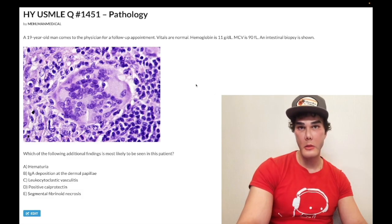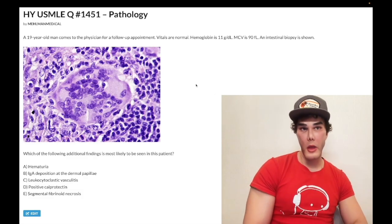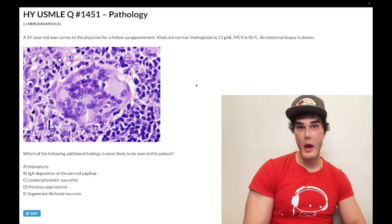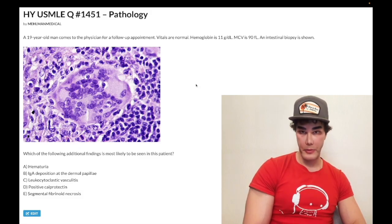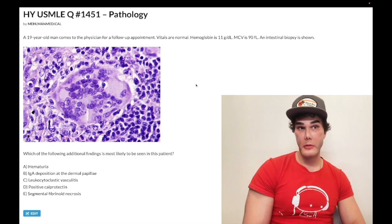How's it going, guys? We have a medium difficulty question for pathology with a 19-year-old dude. He's got hemoglobin of 11, should be 13 to 17.5 in males, non-menstruating women 12 to 17.5, menstruating women. MCV is 90, should be 80 to 100. So you have a normocytic anemia here,